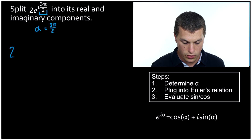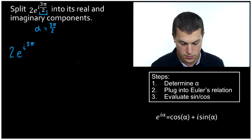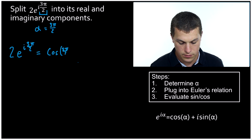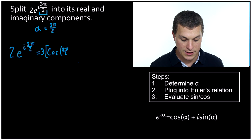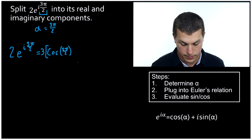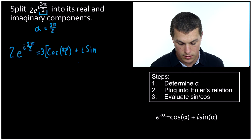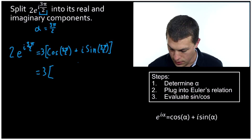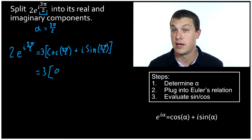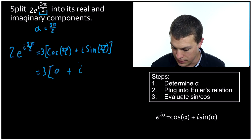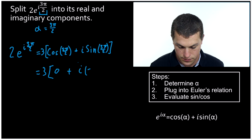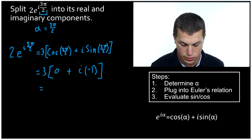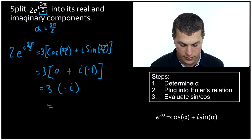We rewrite Euler's relation with our three pi over two. We have three out front in brackets, times cosine of three pi over two plus i times sine of three pi over two. Cosine of three pi over two is zero, and sine of three pi over two is negative one. So we get three times negative i, and our final answer is negative three i.